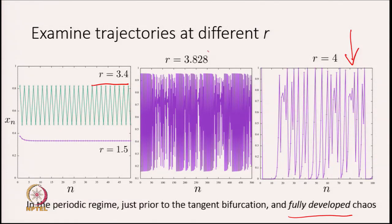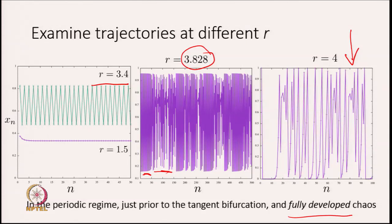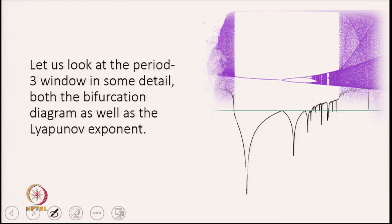At r = 3.828, which is just below where period-3 is born, trajectories look very different. In particular they look almost periodic for a certain period of time, then aperiodic and chaotic, and then this sequence occurs again. In today's lecture we will worry about this kind of dynamics — where it comes from and what are the implications. We look at the bifurcation diagram, the Lyapunov exponent, and the densities.